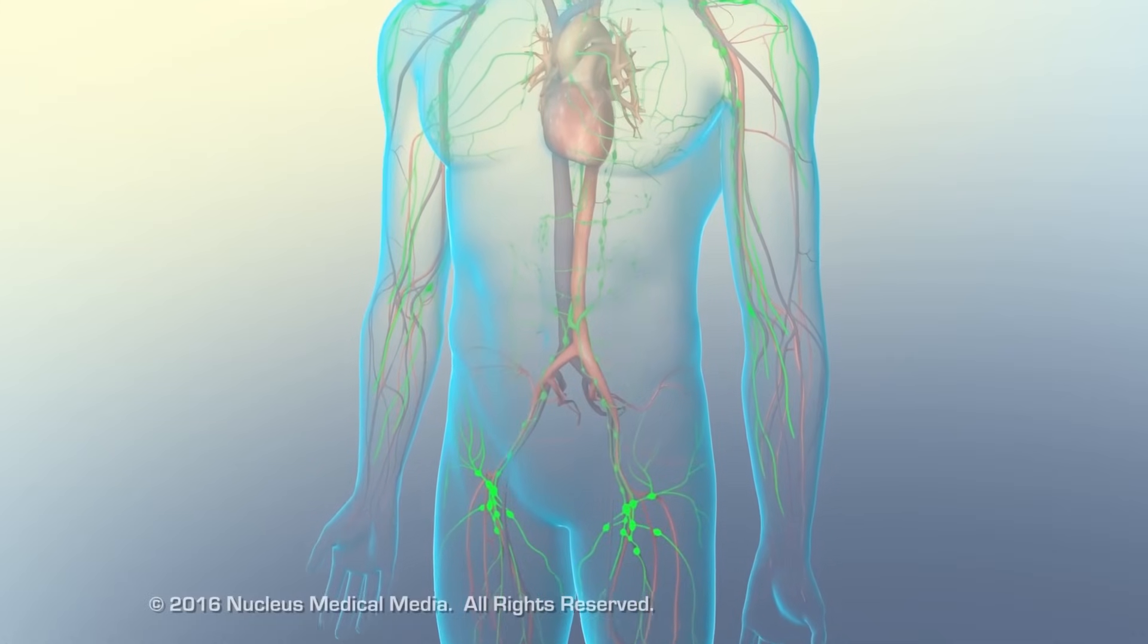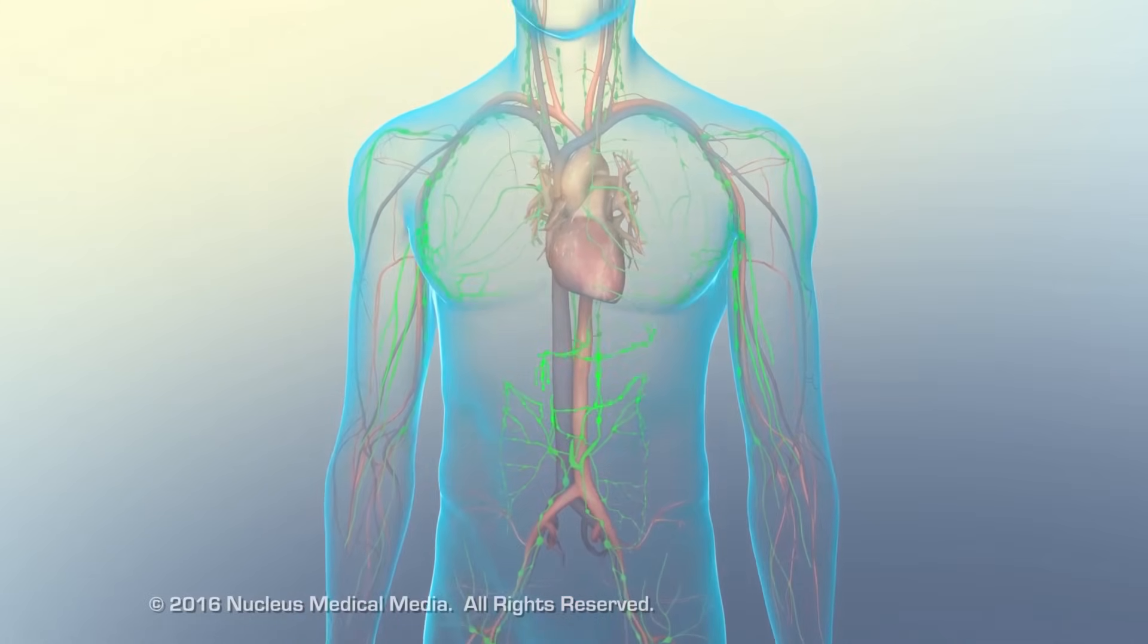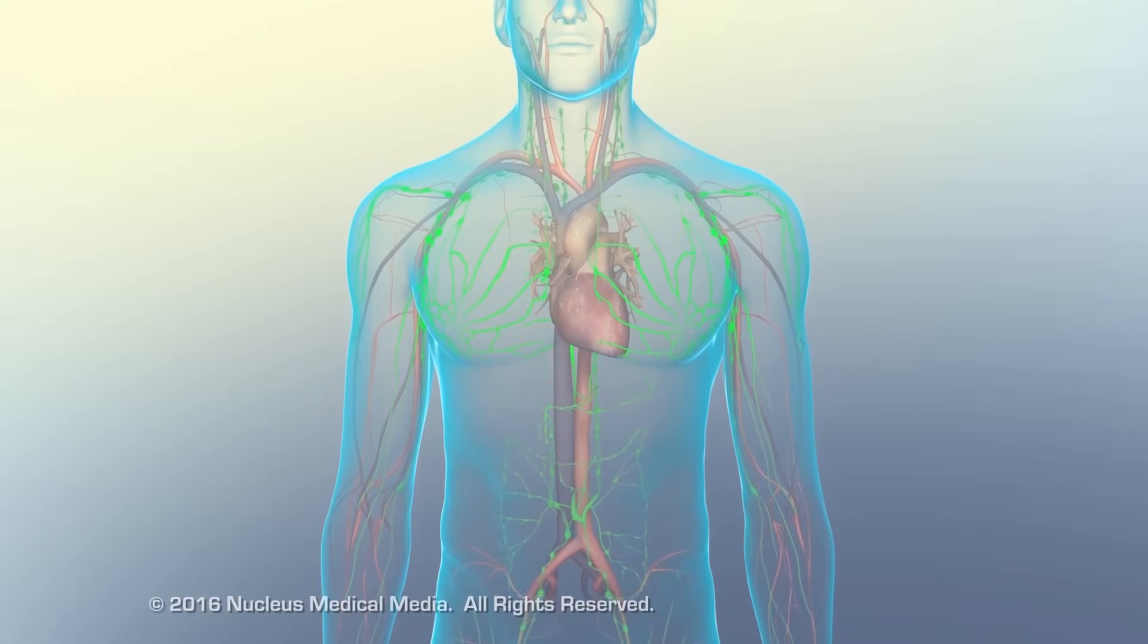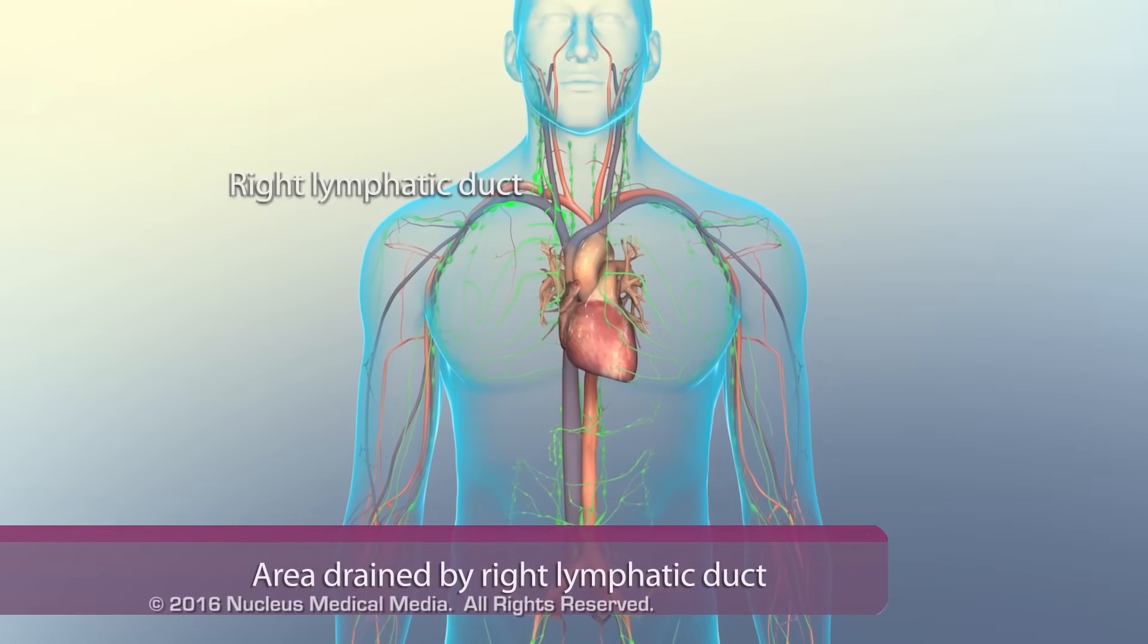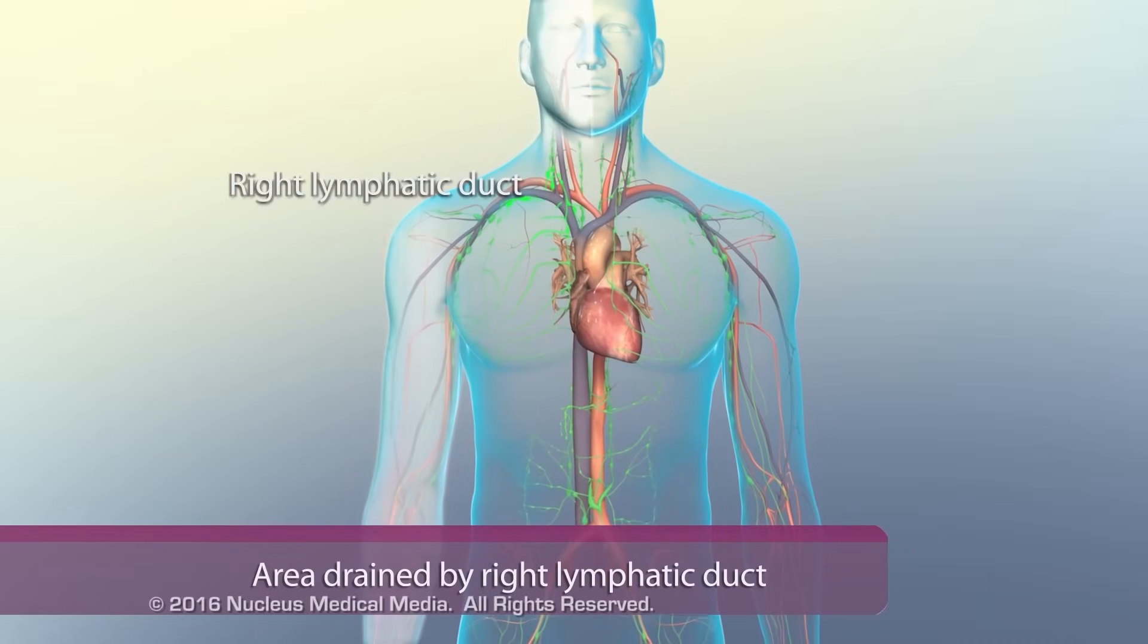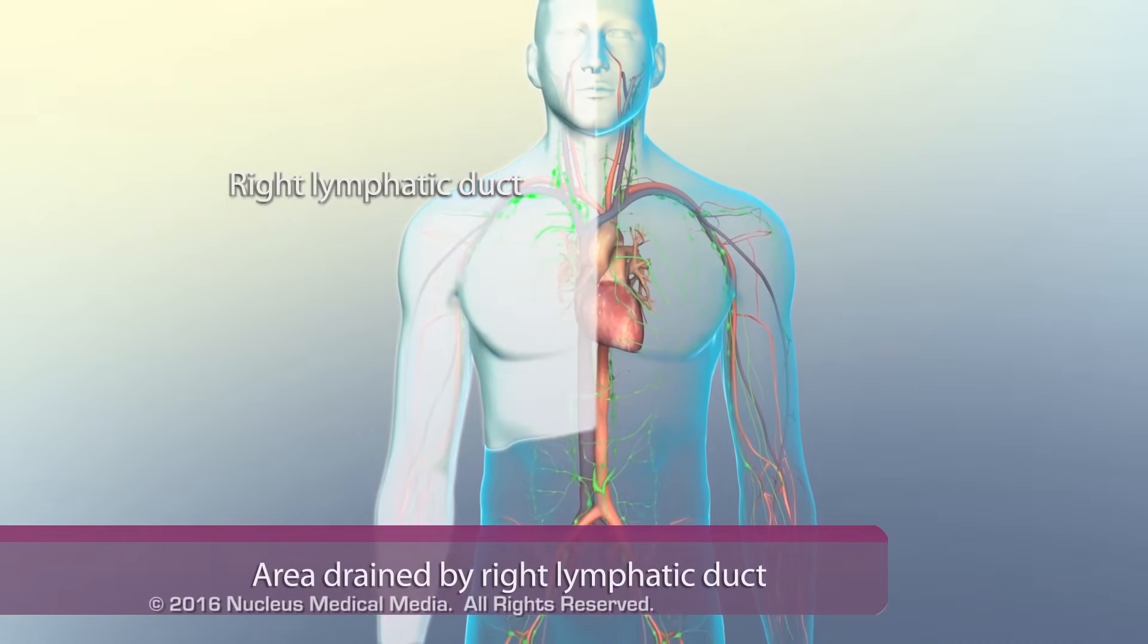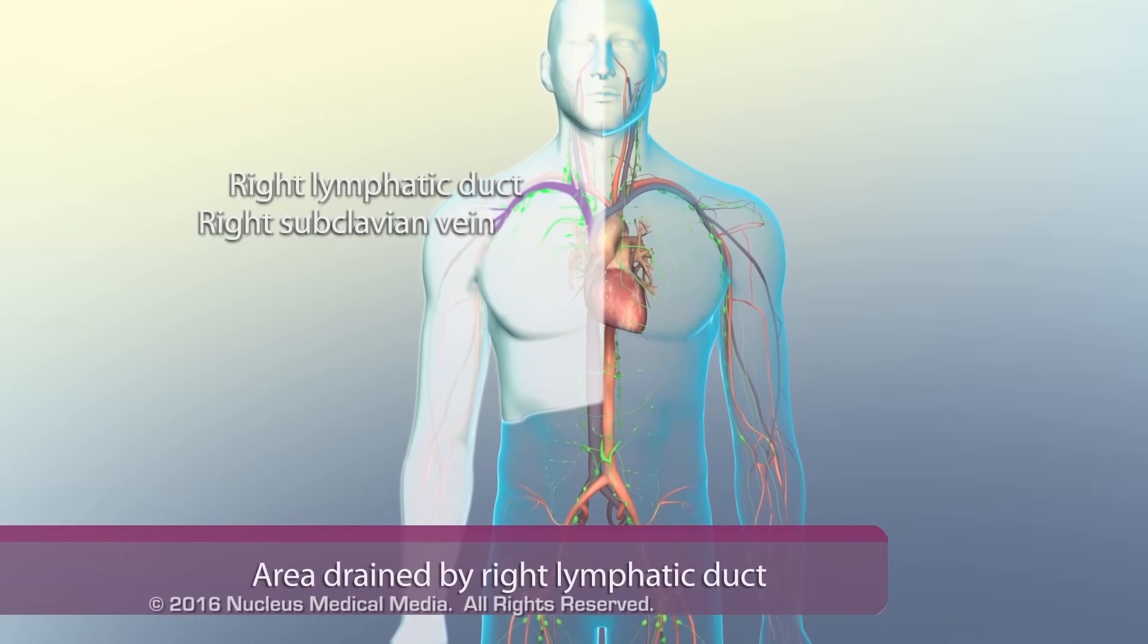Each trunk drains lymph from a particular body region and empties into one of two collecting ducts. The right lymphatic duct drains lymph from the right side of the head, the right arm, and the right side of the thorax to the right subclavian vein.